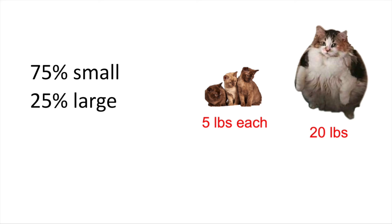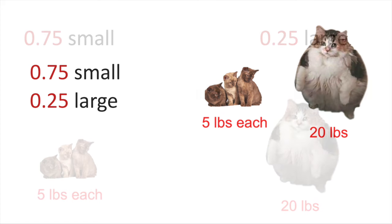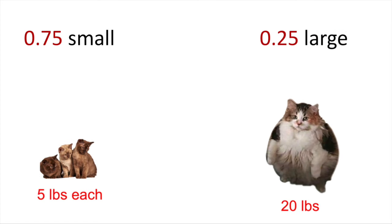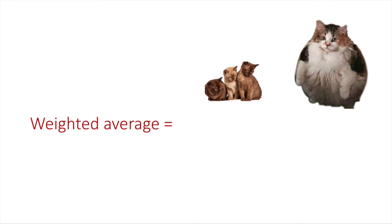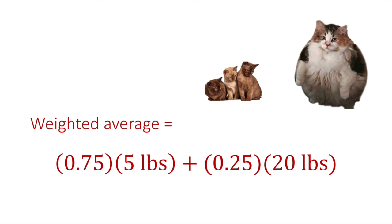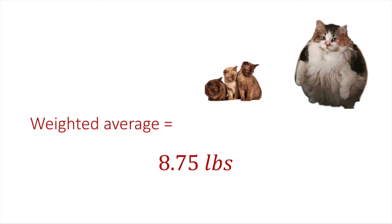Now we take those decimal forms and use them in our weighted average equation. We take the percent abundance of each type of cat and multiply it by the weight of each cat, then add all those numbers up. Our equation looks like this: 0.75 times 5 pounds plus 0.25 times 20 pounds equals 8.75 pounds. We can do something similar with isotopes.